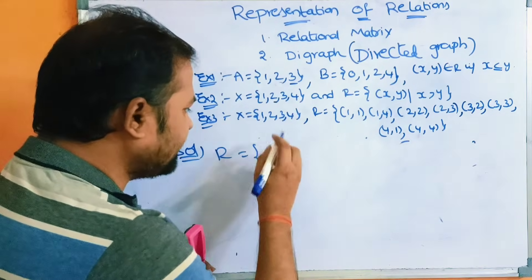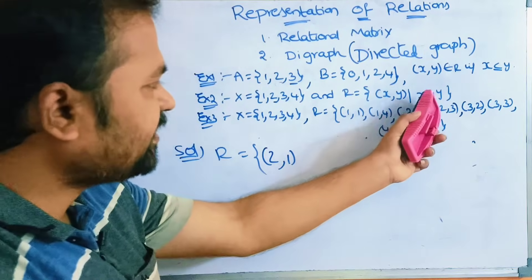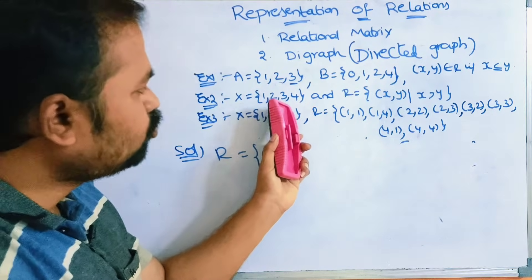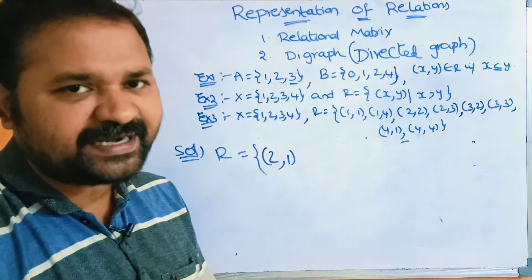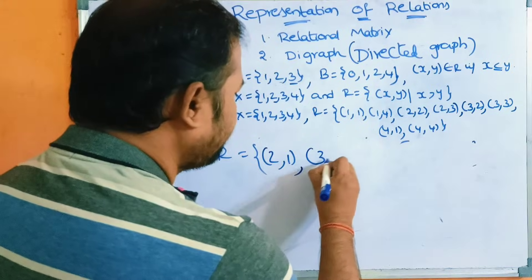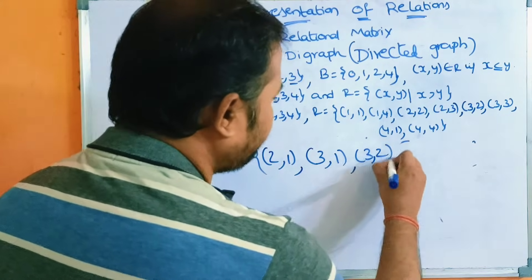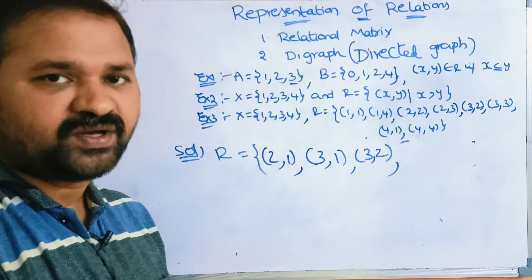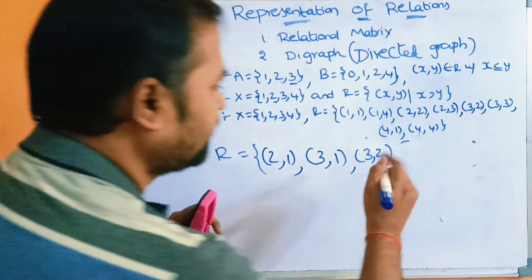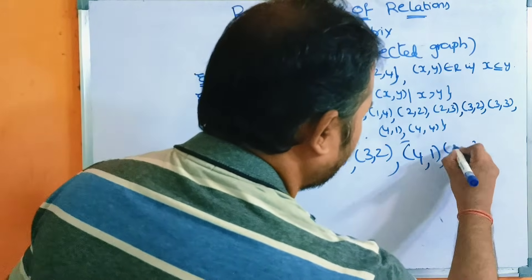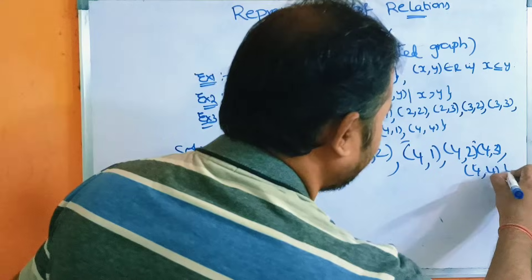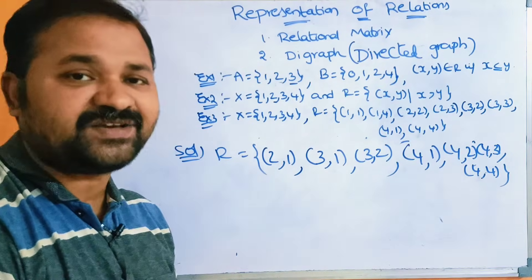Taking element 2: we can write (2,1) since 2 > 1. We cannot write (2,2), (2,3), or (2,4) as the condition fails. For element 3: we can write (3,1) and (3,2), but not (3,3) since 3 > 3 is false, and not (3,4). For element 4: we can write all pairs — (4,1), (4,2), (4,3) — since 4 is greater than 1, 2, and 3. Note that (4,4) would require 4 > 4 which is false.